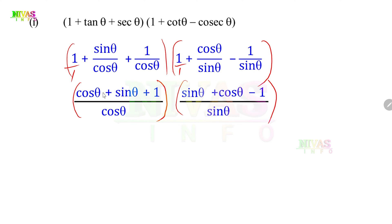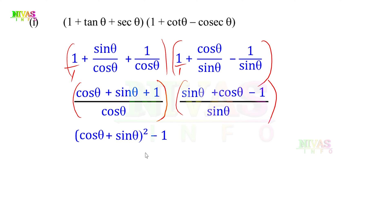So we have: first bracket is (cosθ + sinθ + 1) over cosθ, and second bracket is (sinθ + cosθ - 1) over sinθ. Multiplying the two brackets gives (cosθ + sinθ + 1)(sinθ + cosθ - 1) divided by cosθ·sinθ. The numerator can be written as (cosθ + sinθ + 1)(cosθ + sinθ - 1), which is (cosθ + sinθ)² - 1² in the numerator, minus 1 divided by cosθ·sinθ.